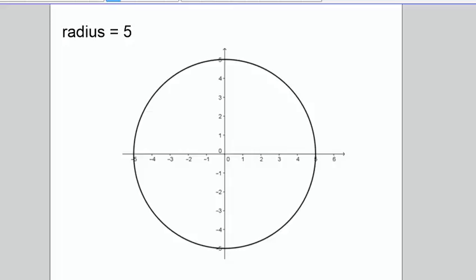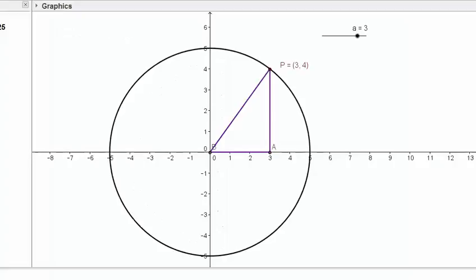This one has a radius of 5 and let's take a look at this one on GeoGebra. Here we are at GeoGebra and when we have a radius of 5, my equation is going to be x squared plus y squared equals 5 squared, or x squared plus y squared equals 25.